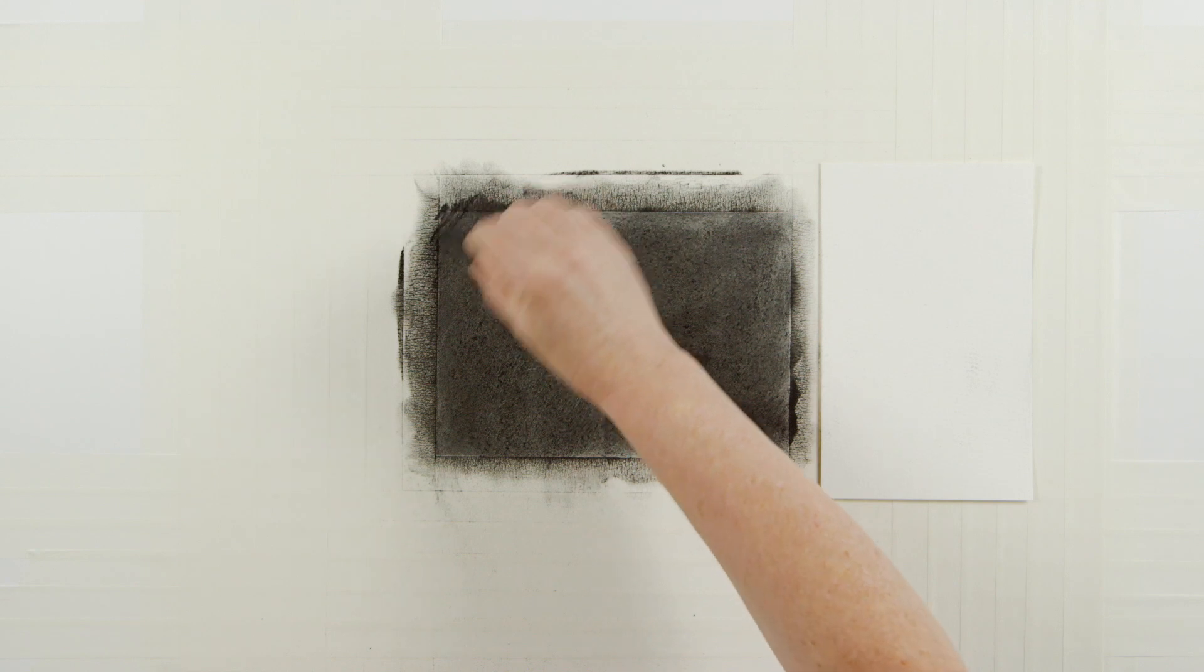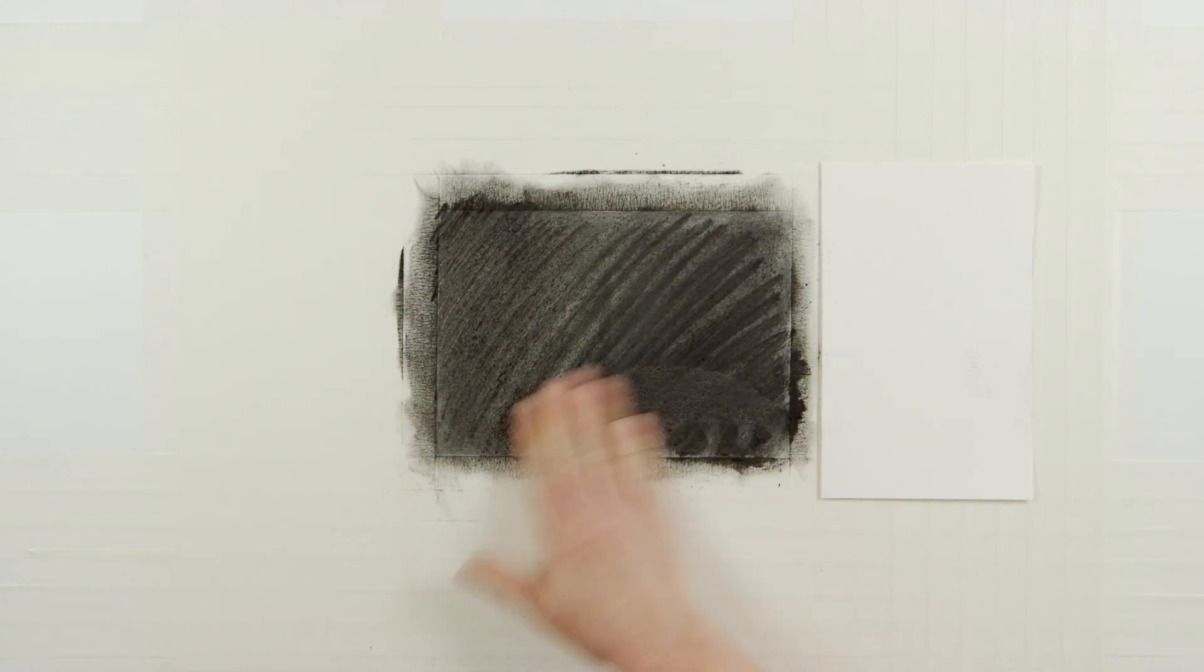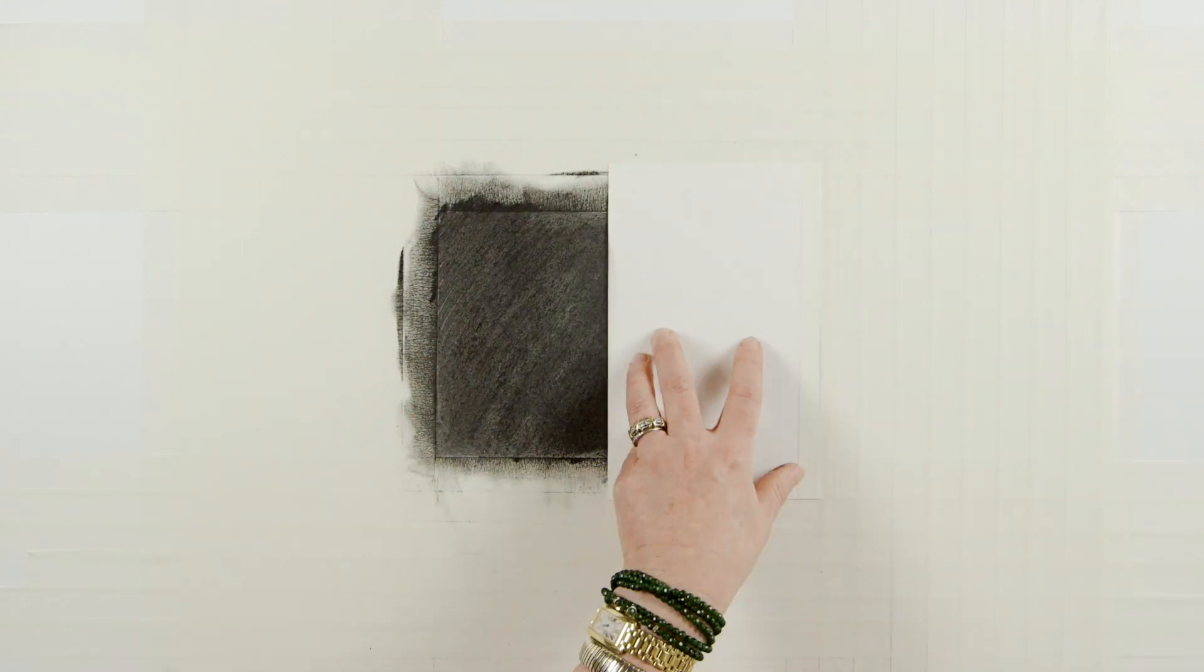Once dry, I'll add another layer of charcoal and rub away any unfixed charcoal. Remask with the flap and spray again.